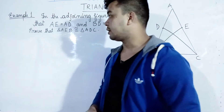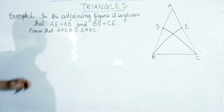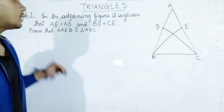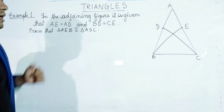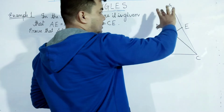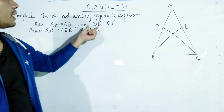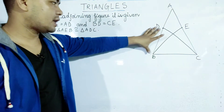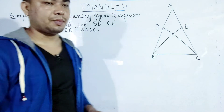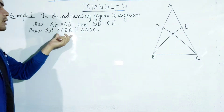Example number 1. In this example, we have triangle AEB and triangle ADC.